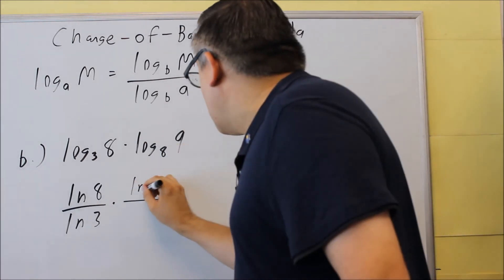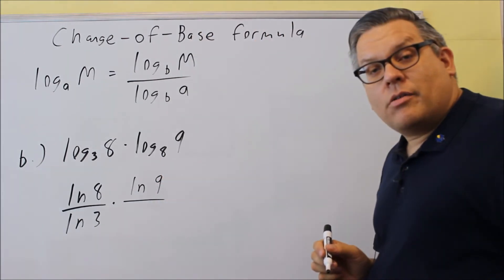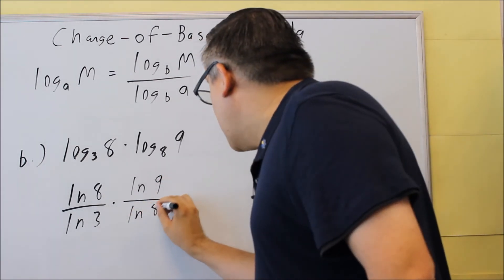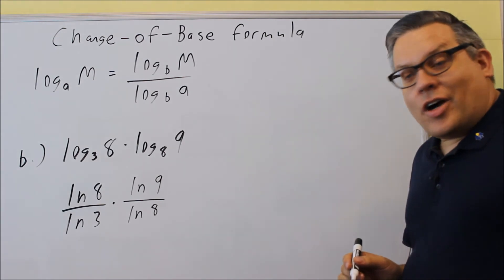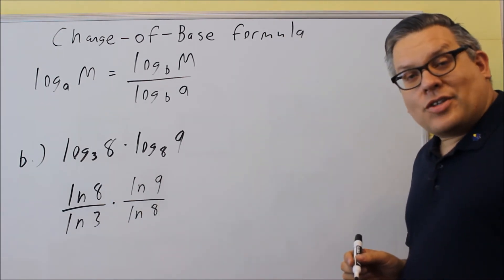So I'm going to do natural log of the big number, natural log of 9, divided by natural log of 8, just like this. And this is what I'm going to be multiplying together.